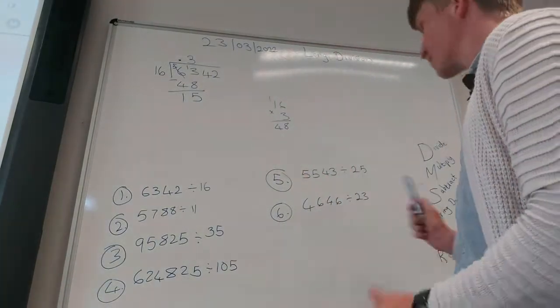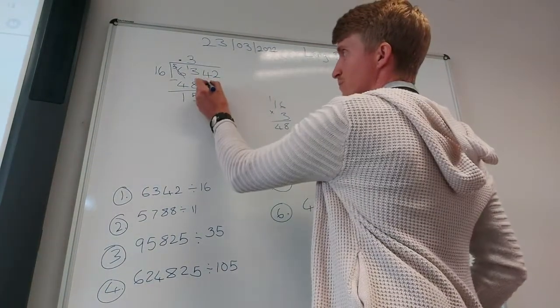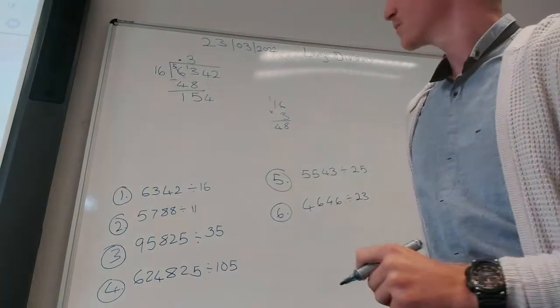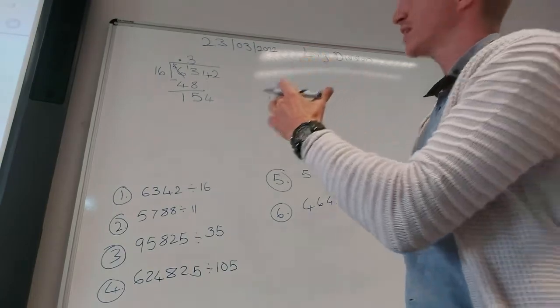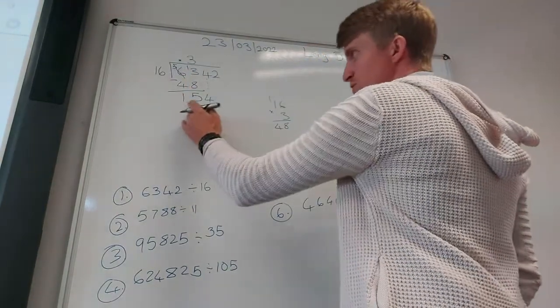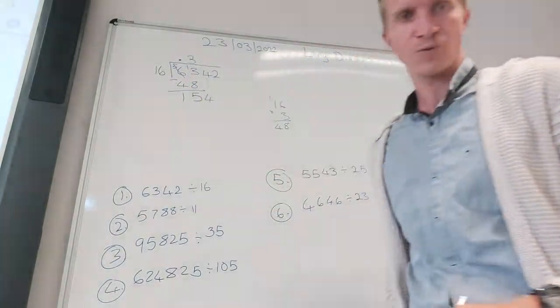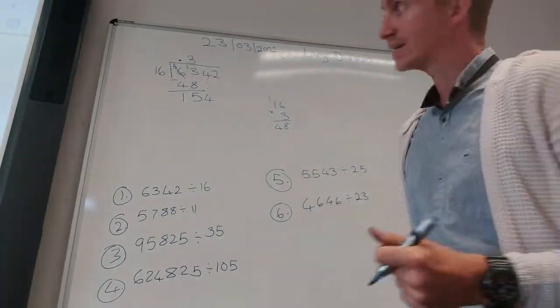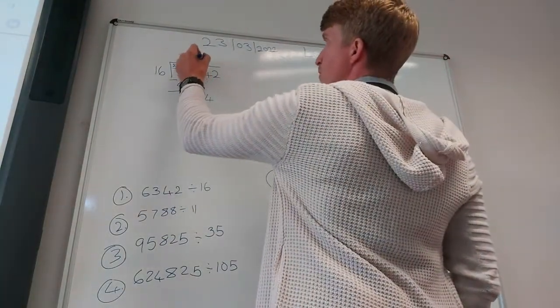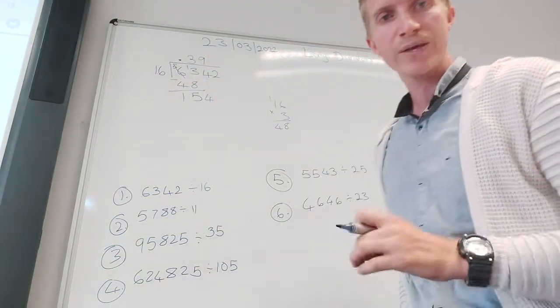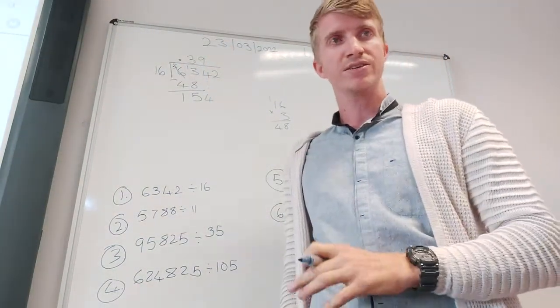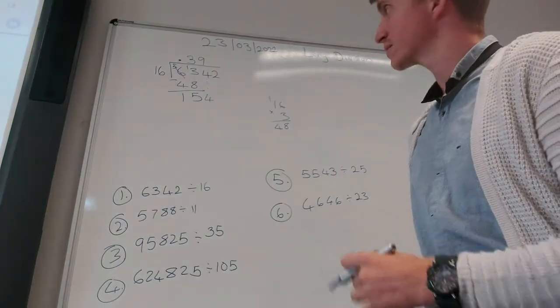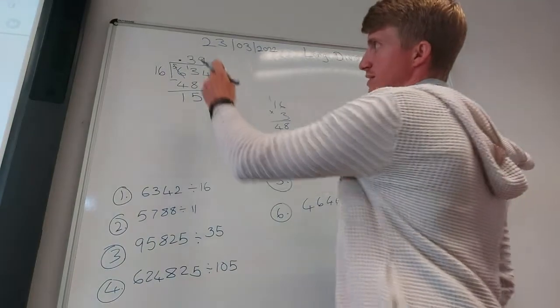Then my next step is bring down. So I bring down the 4. Then I have to say 16 goes into 154. How many times? It's going to be roughly 9 times. Let's put a 9 up there. Remember I showed you how we can test if our answer is close enough. If not, we can always redo that one step.